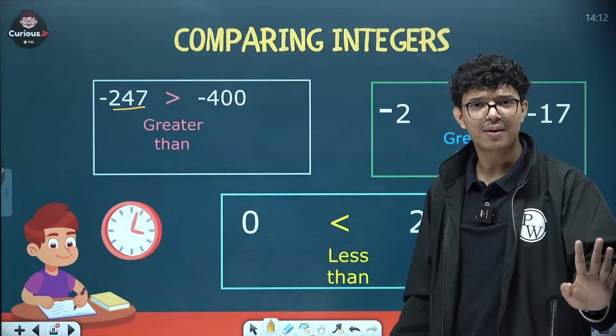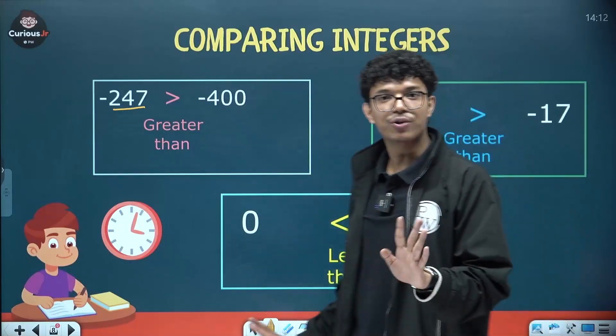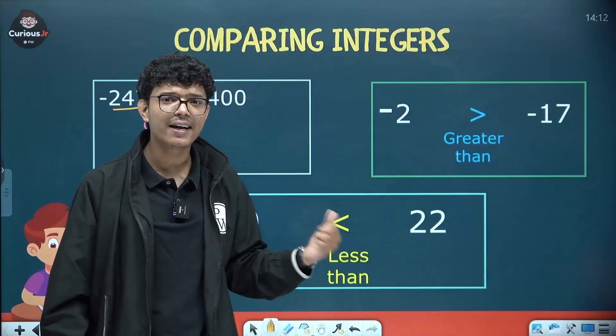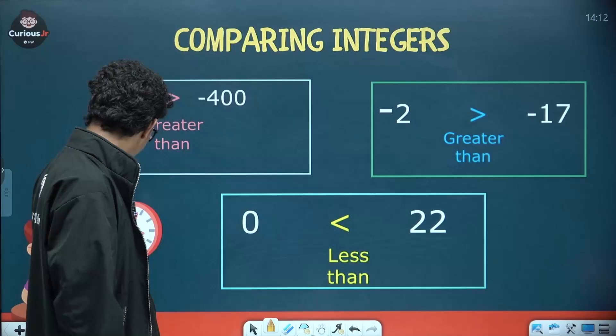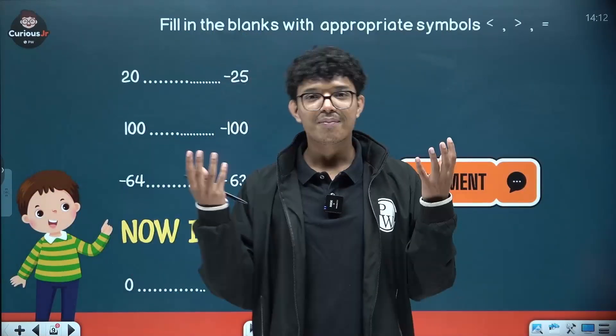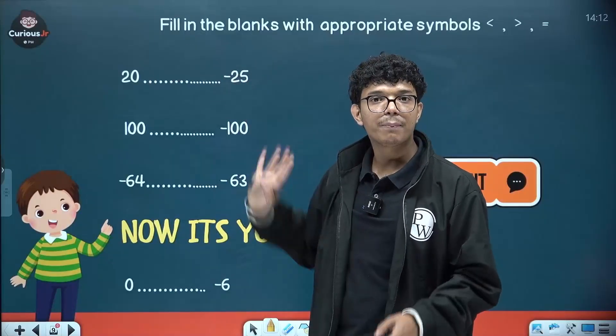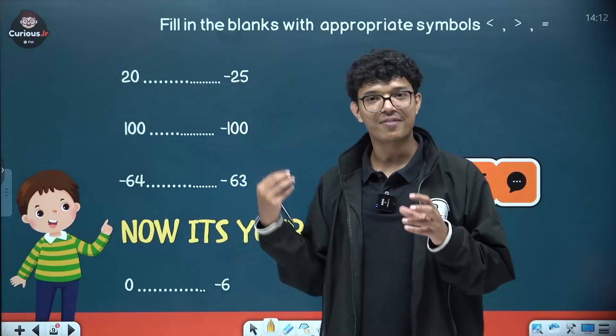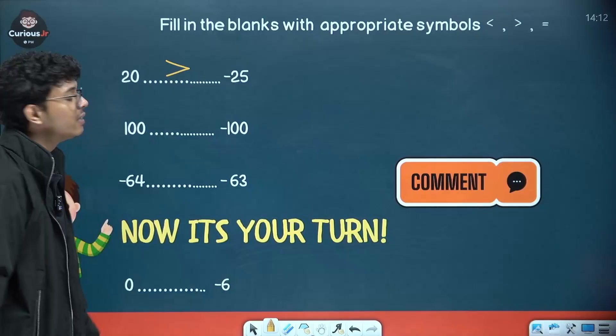Toh bachho look at this. Positive numbers are easy to compare. Mainne bataya hoon aapko. 0 is less than 22 kyunki 0 is smaller value. 0 means nothing and 22 is a higher value. So obviously 0 chota hai. So now let's practice some questions because practice makes progress. So here positive and negative compare karna hai. Easy hai. Positive will always be greater and negative will always be smaller.